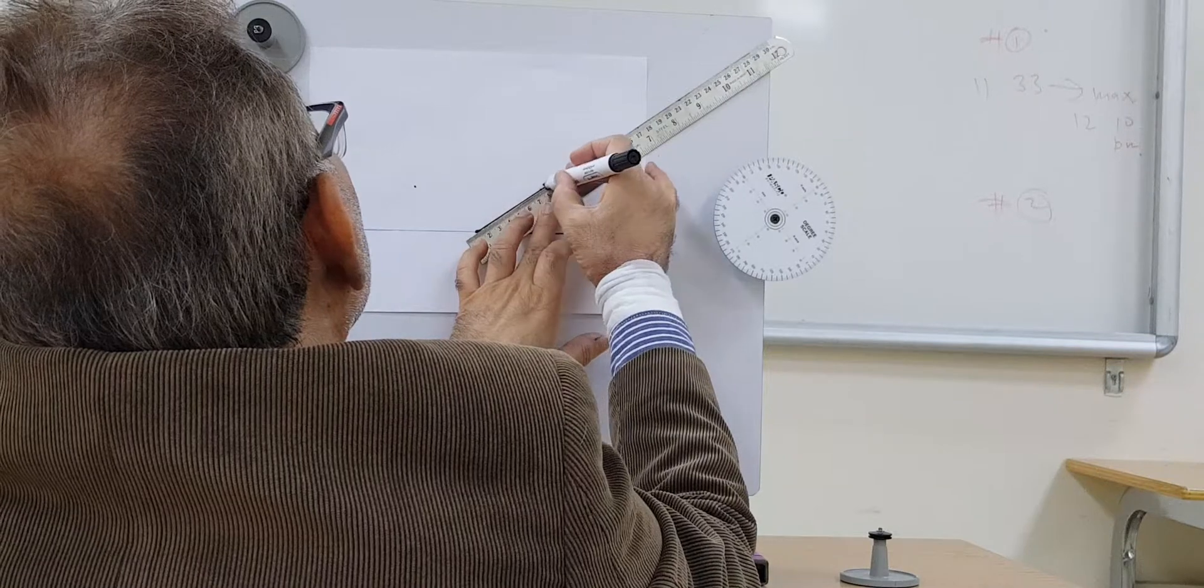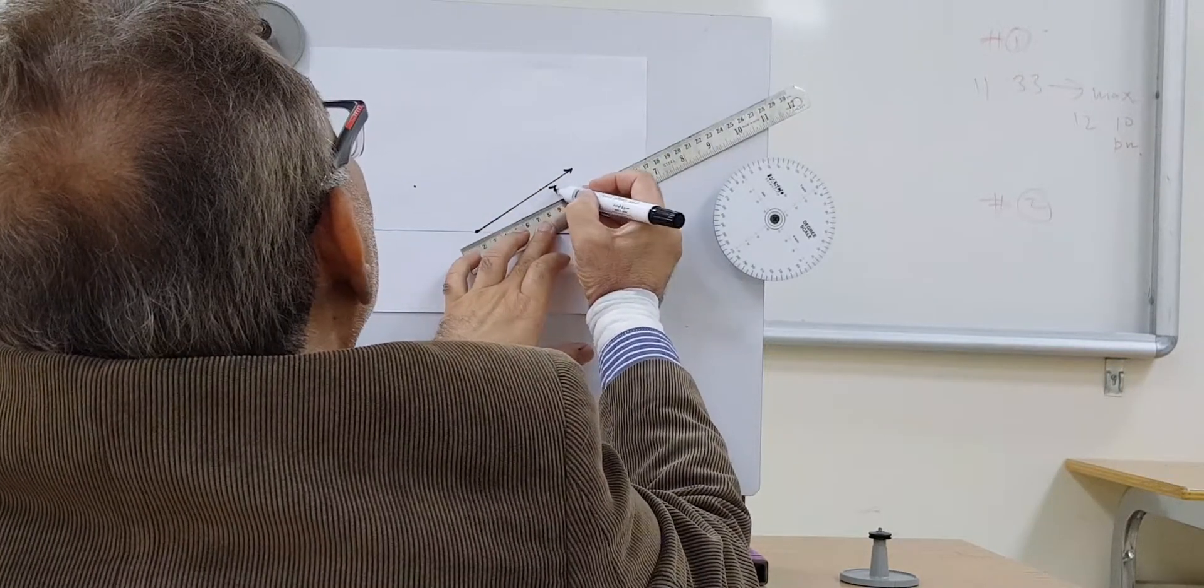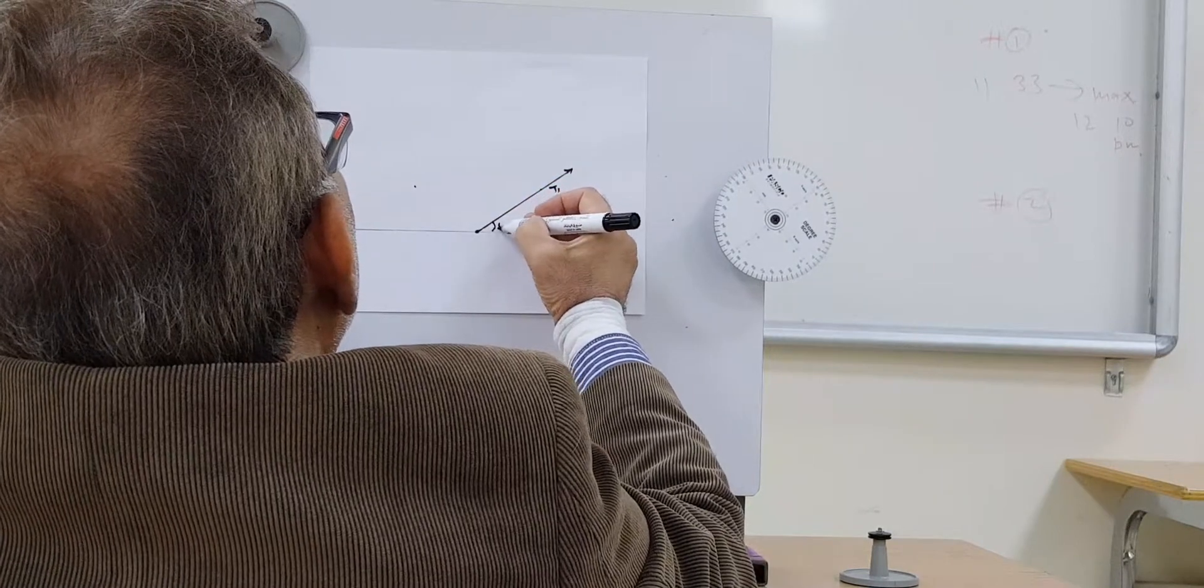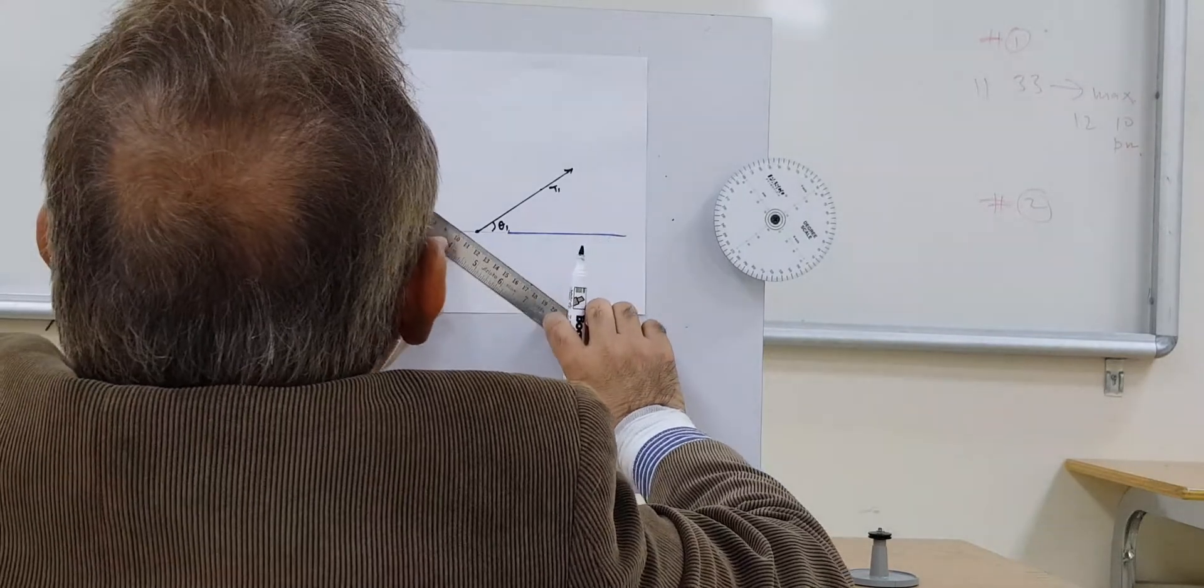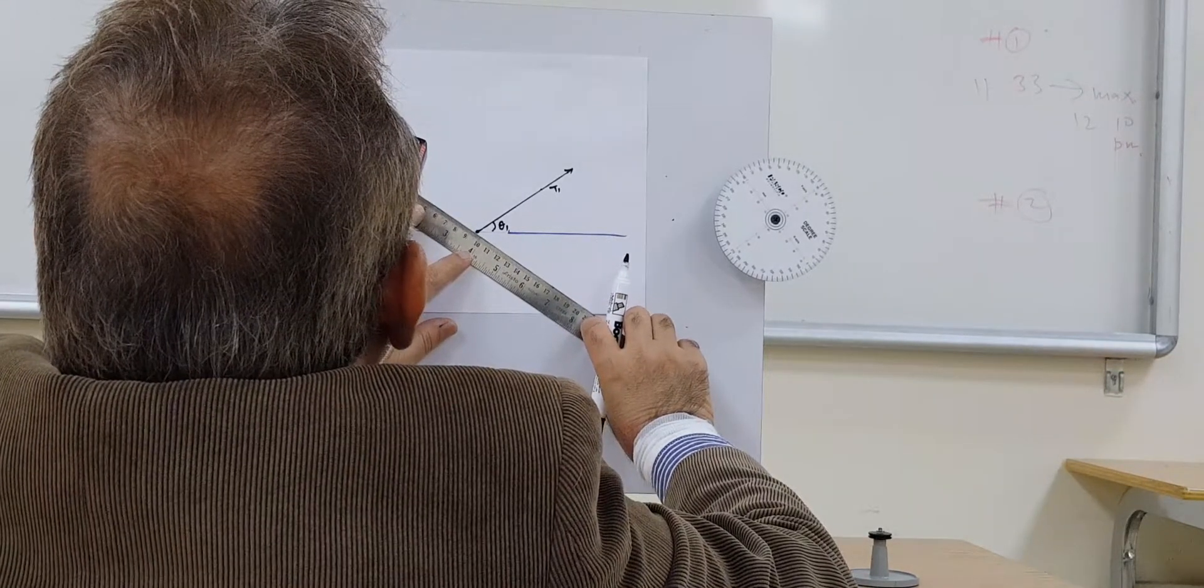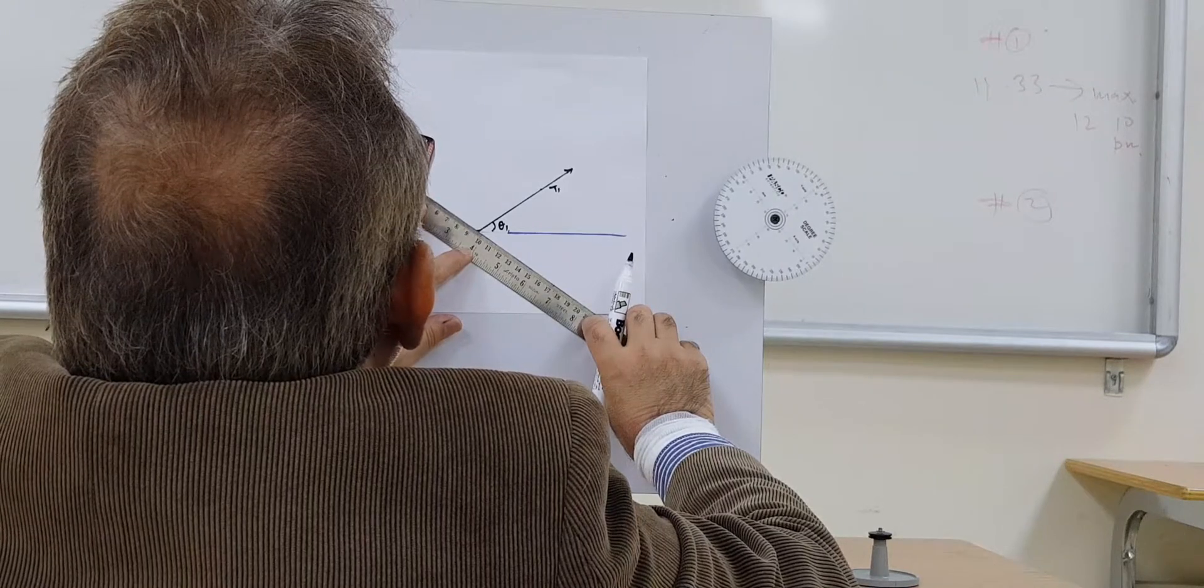You will use pencil. This is T1, and this is your theta 1. And now again, 9.5 centimeters over here.